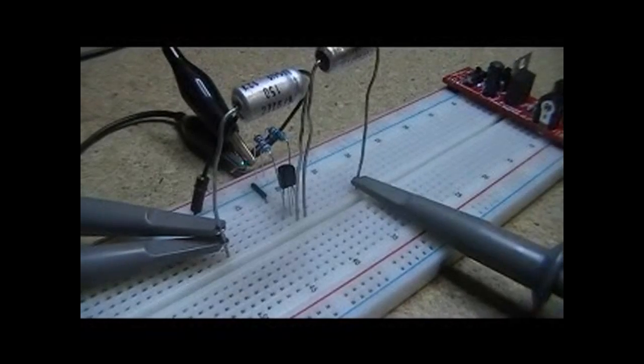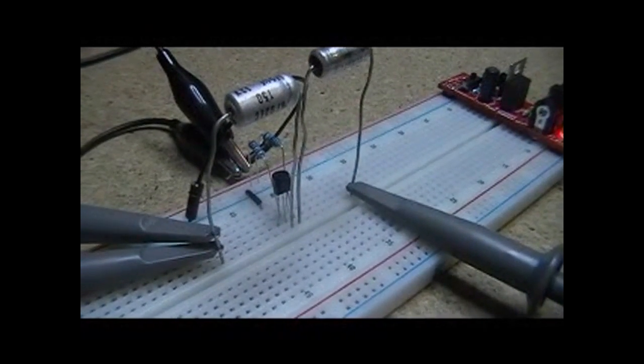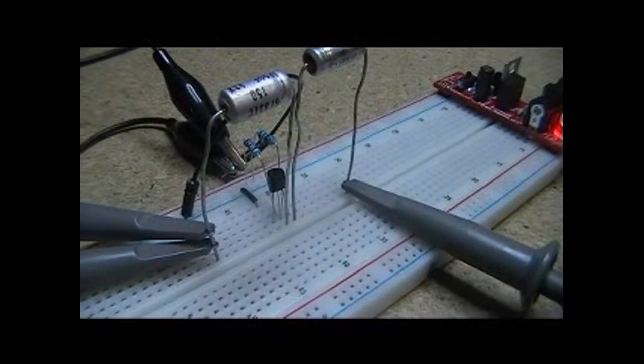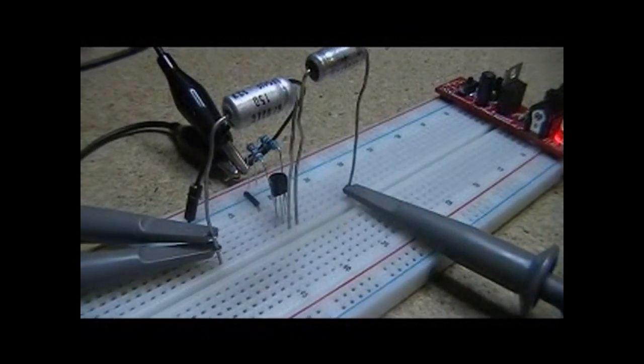And I've got a resistor between the positive rail and the collector, a resistor between the positive rail and the base, and then the emitter is tied directly to the ground rail, or the negative rail.